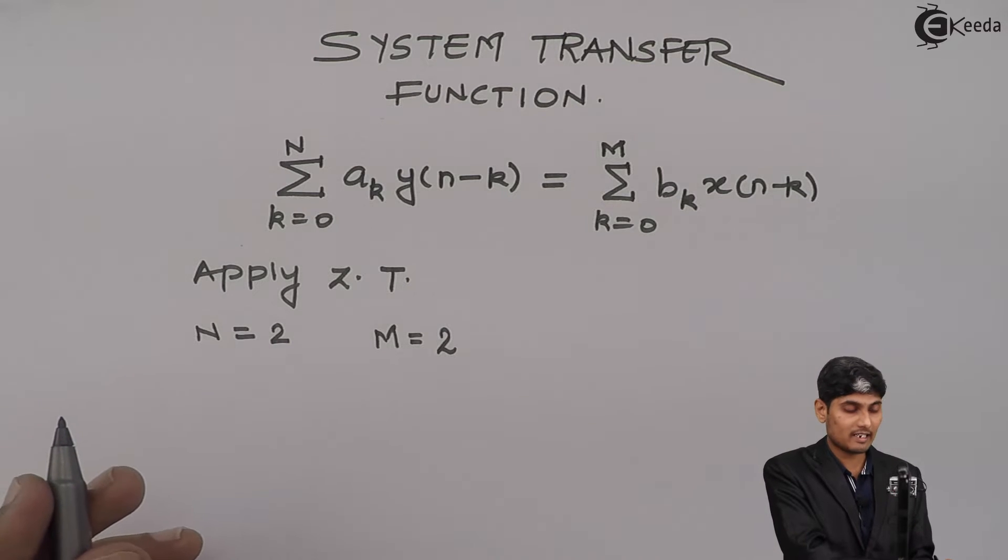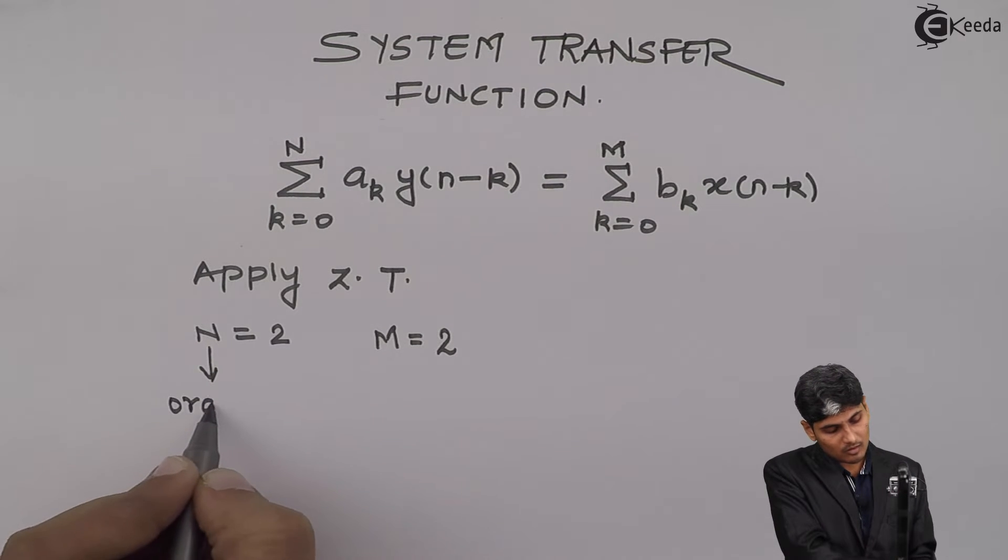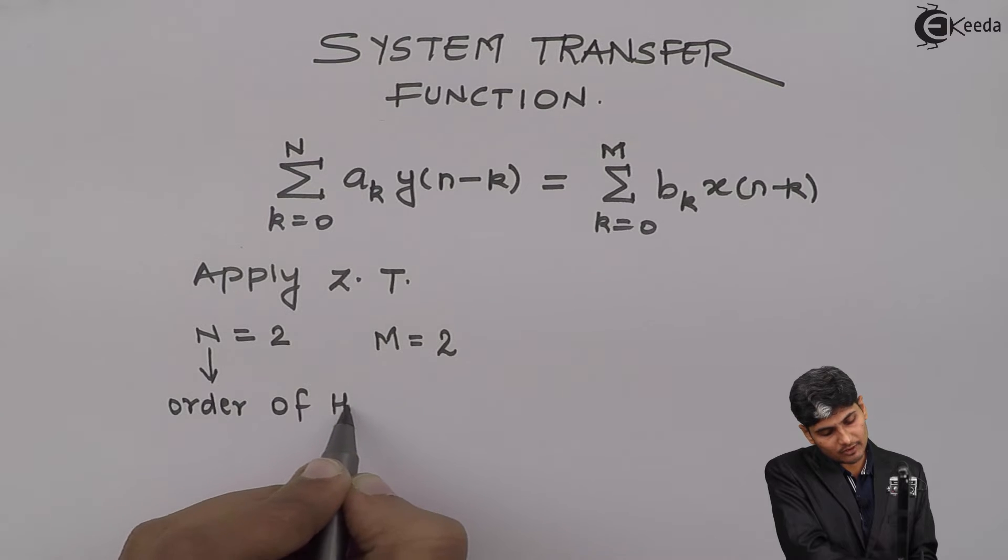But here in this case, I take n equals 2 and m equals 2 as well. n is called as the order of the difference equation.